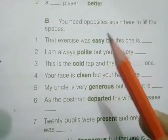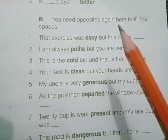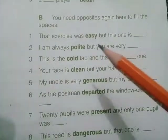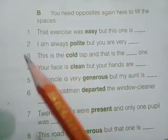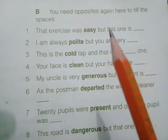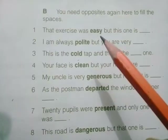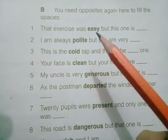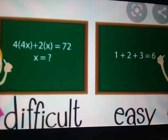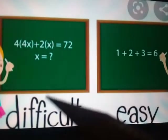Now let's start Exercise B. The instruction says: you need opposites again to fill the spaces. First statement: 'that exercise was easy but this one is dash.' 'Easy' means not difficult. The opposite of easy will be 'difficult.' Easy — difficult.